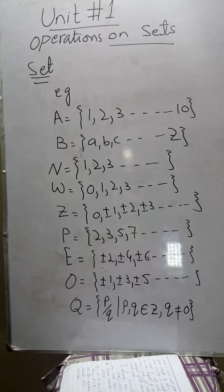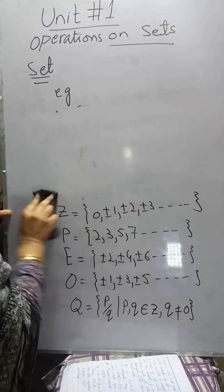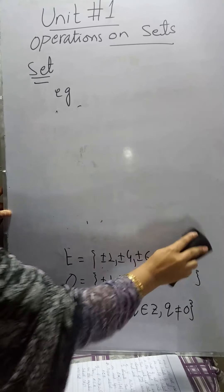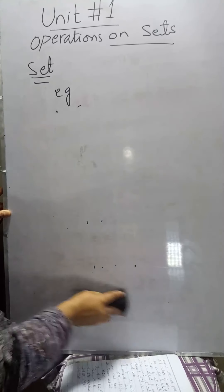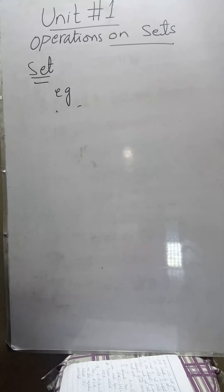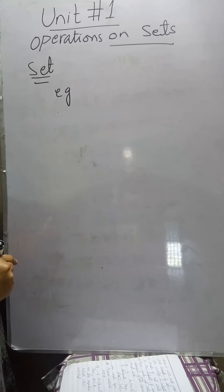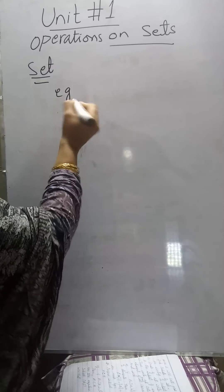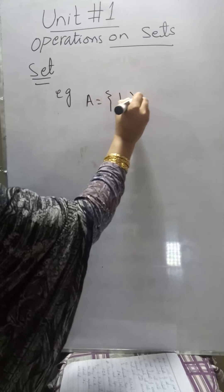Now I will tell you how we can find the subsets of a set. For writing the subsets of a given set, first of all we write the empty set, since empty set is the subset of all non-empty sets. For example, if A is equal to 1, 2...